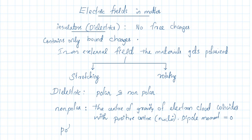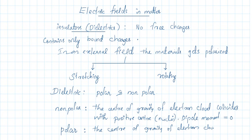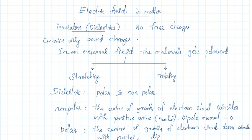In the case of a polar molecule, the center of gravity of the electron cloud does not coincide with the nuclei. Here the electron cloud — a quantum mechanical concept — has its center of gravity displaced from the nucleus. So there will be a net dipole moment that is non-zero. Such molecules are called polar molecules. So basically, dielectrics are classified into non-polar and polar molecules.